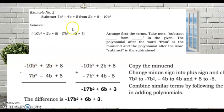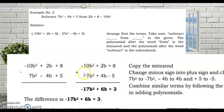Then we have minus (7b² − 4b + 5), which is already arranged. Copy the minuend, change the minus sign to plus, then change the signs of each term of the subtrahend: negative 7b² becomes negative 7b² — wait, it stays negative 7b²; negative 4b becomes positive 4b; and positive 5 becomes negative 5.